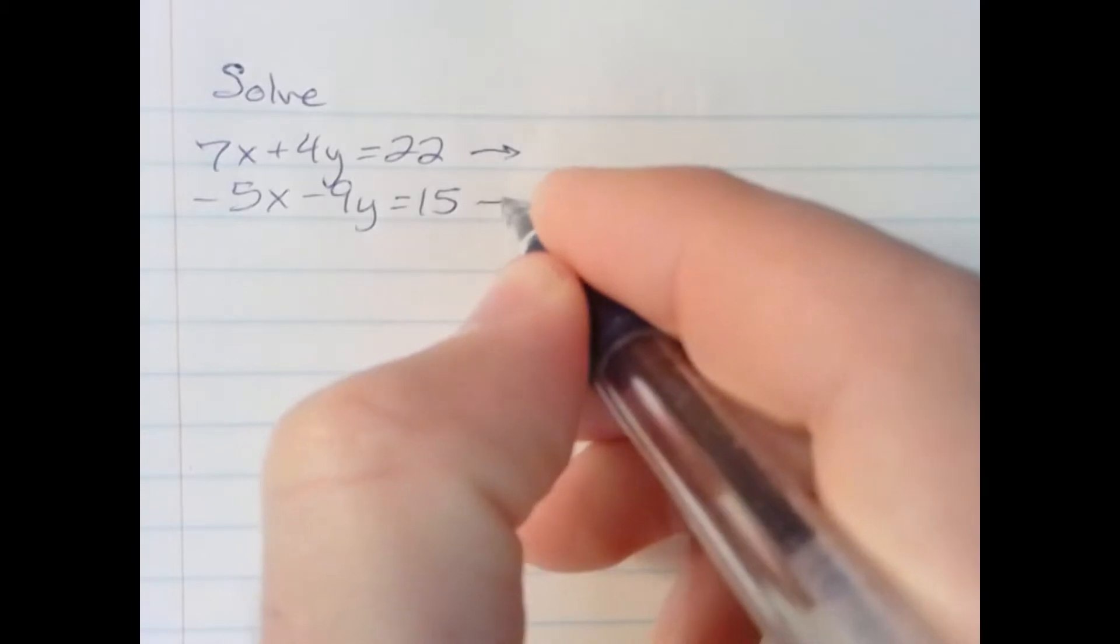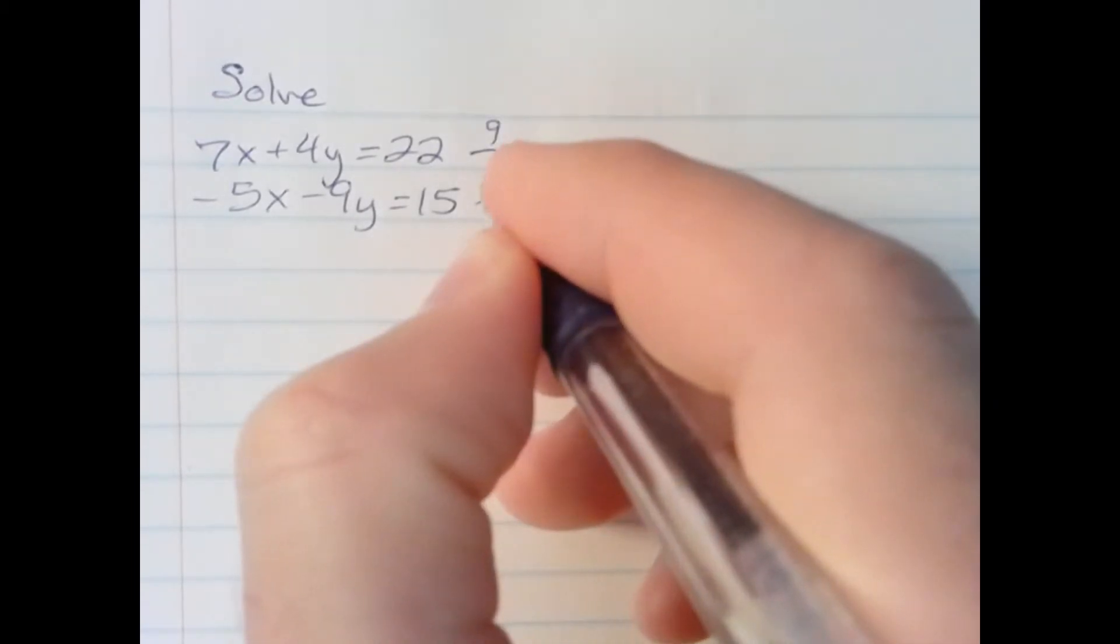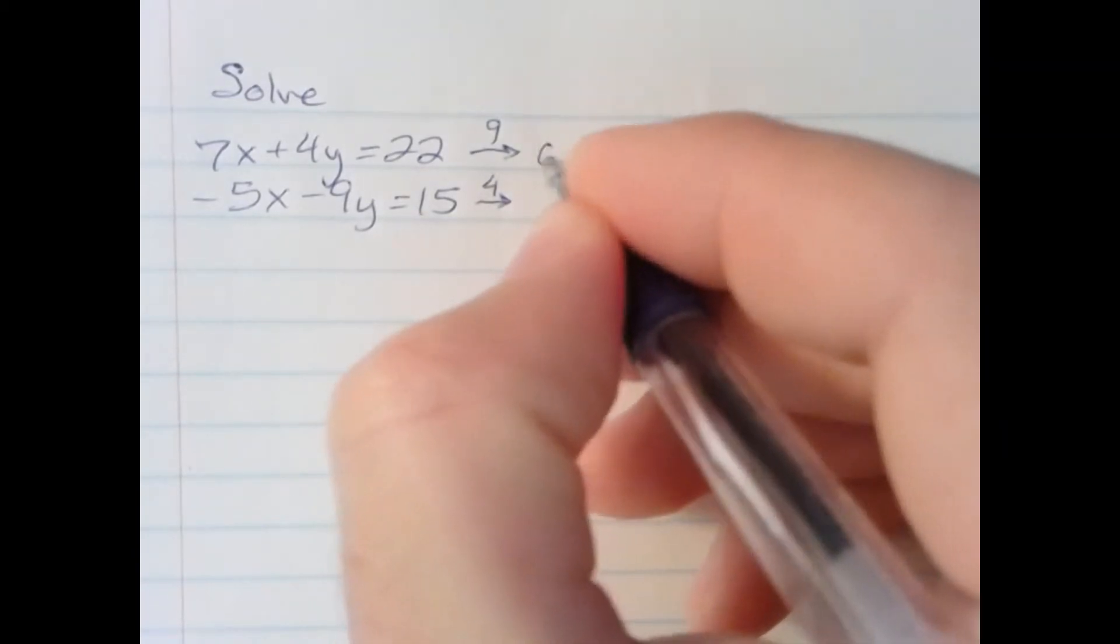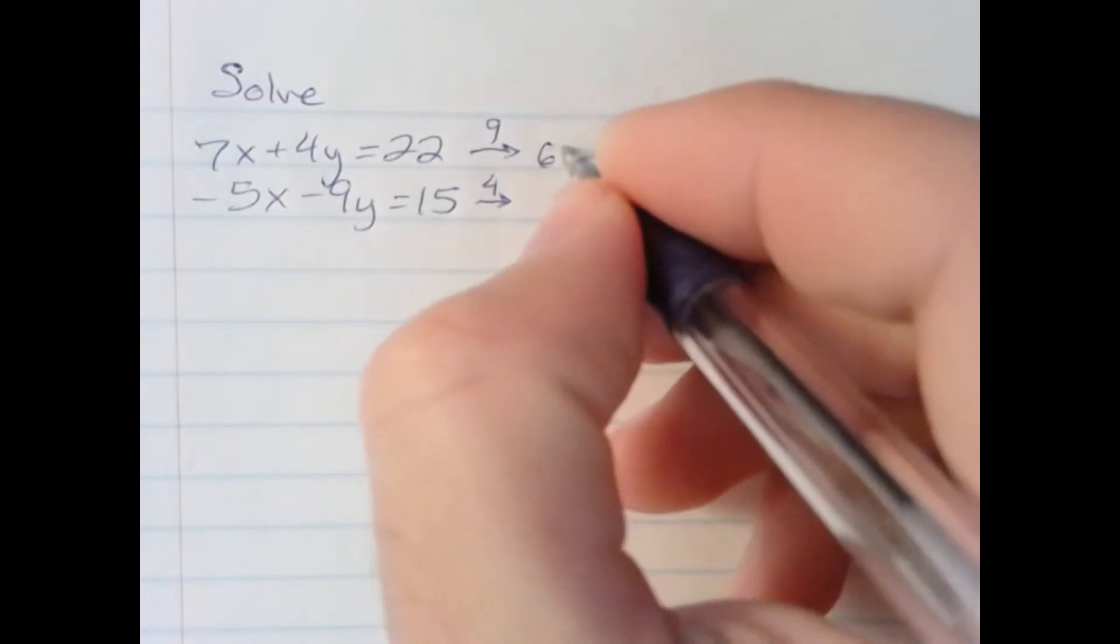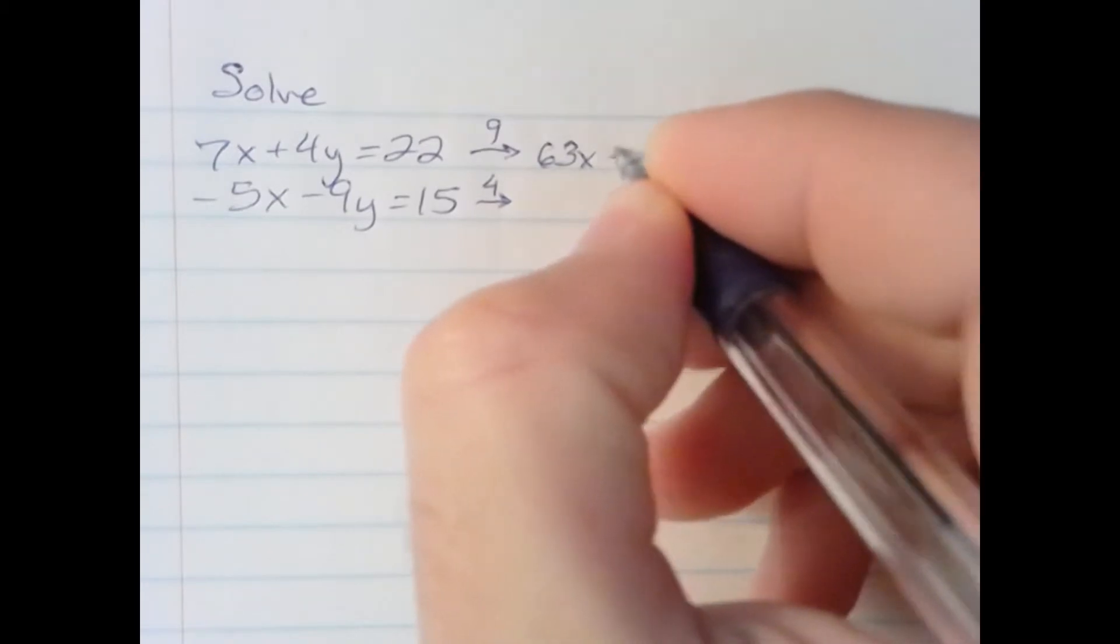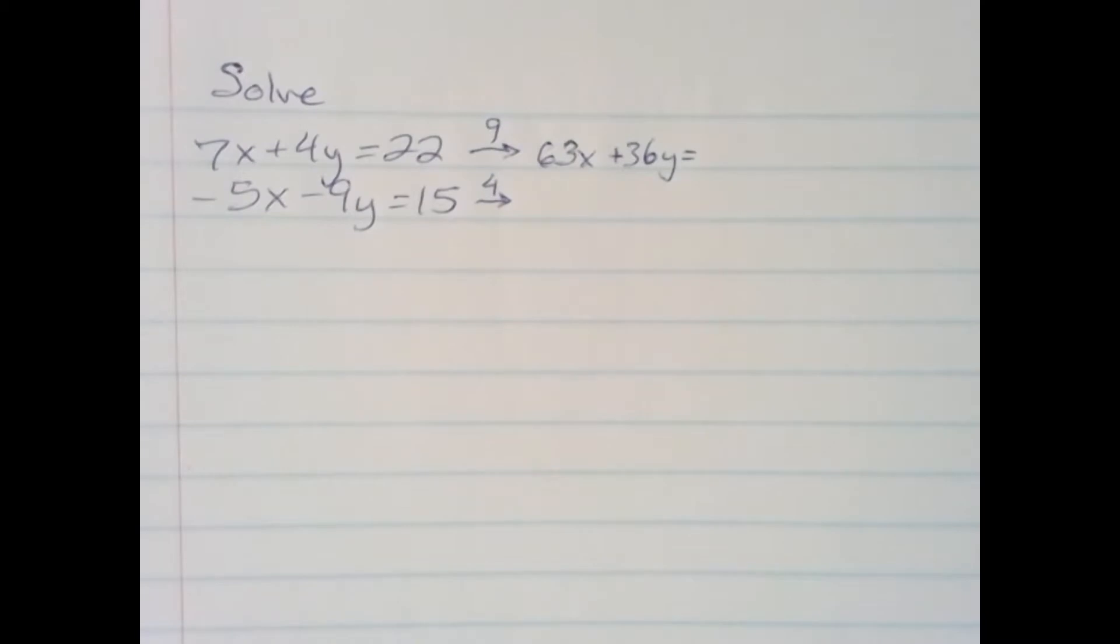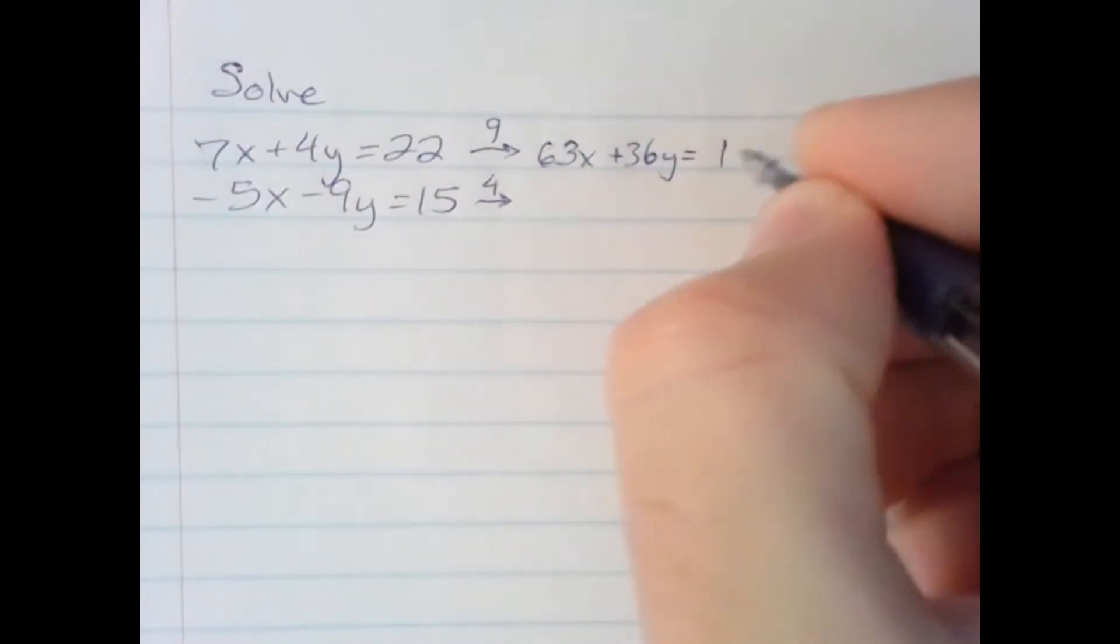So that means multiply the top equation by 9, bottom equation by 4. The top equation we will have 63x plus 36y equals 9 times 22 is 198.